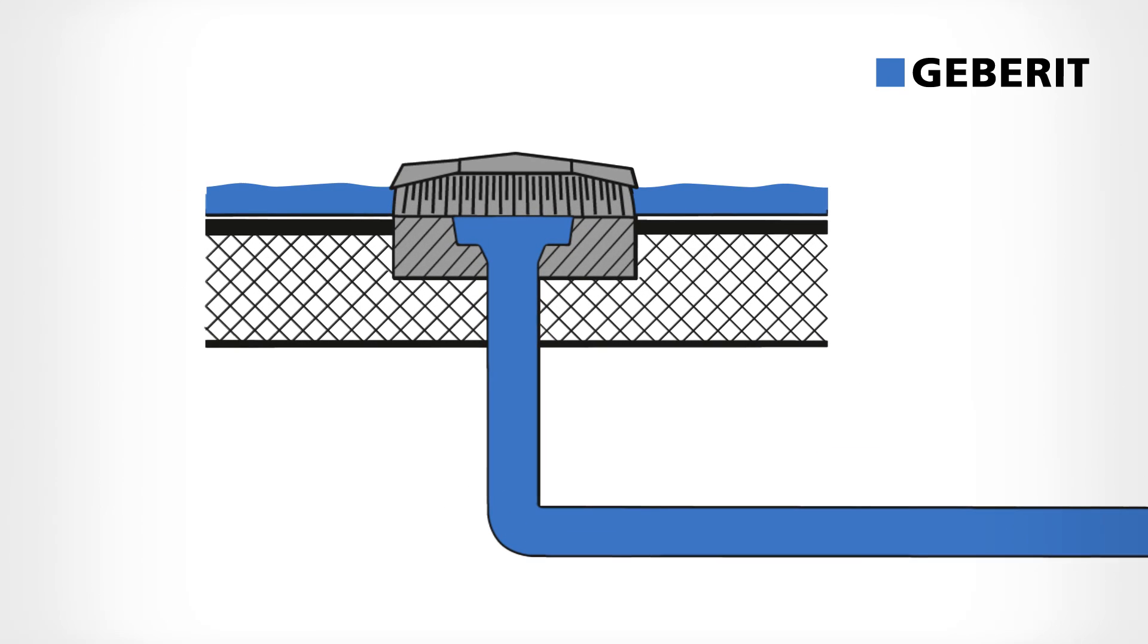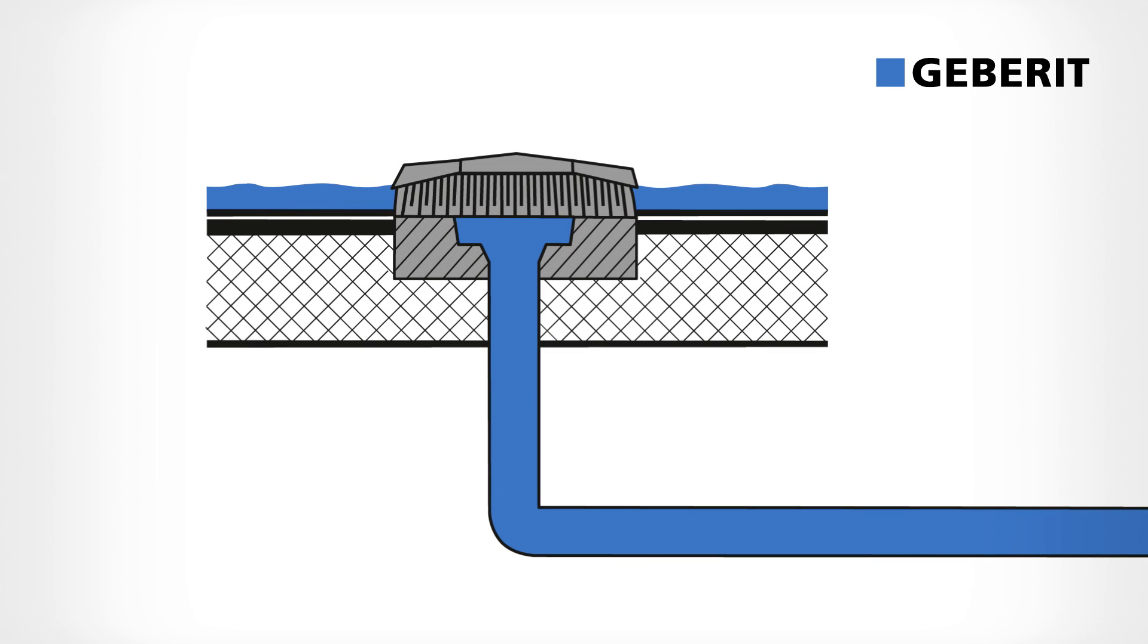Geberit Pluvia roof outlets make sure that all the rainwater drains off without interruption of the suction effect. And that's not all. The high flow velocity ensures that the system is self-cleaning. This cuts down on cleaning and maintenance costs.